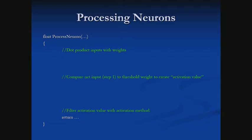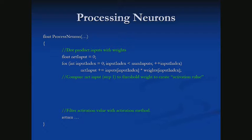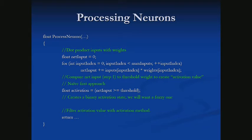First things first — that's sum product: we take each input times its given weight and add all of those together. Then step two: we compare our net input to some threshold value. As mentioned, this creates a binary activation, and we're going to want to change that.